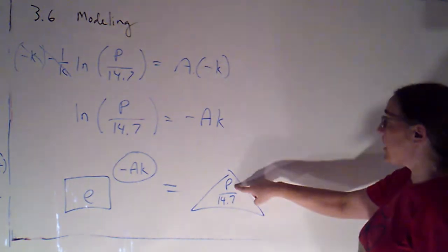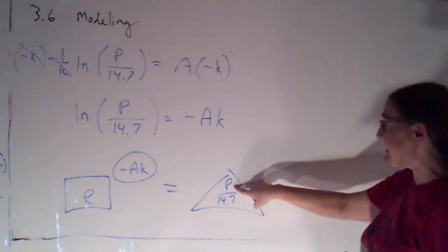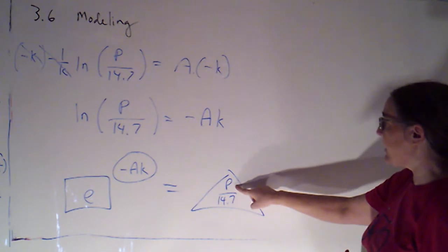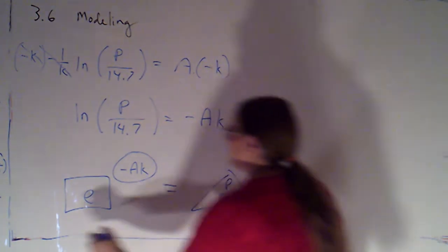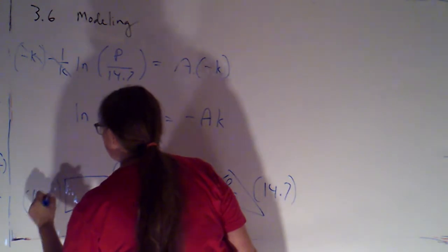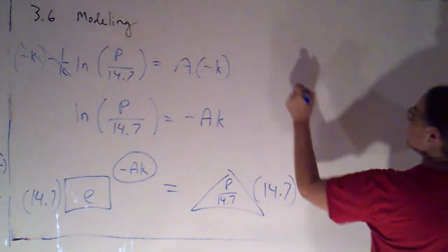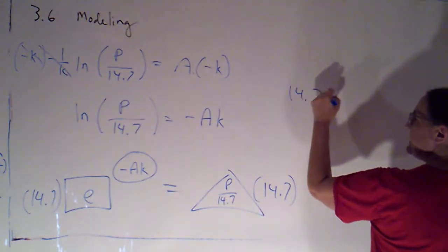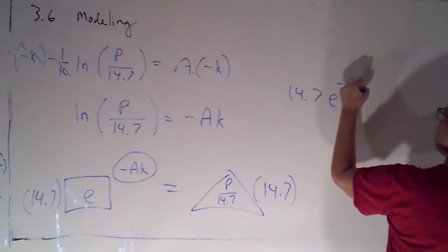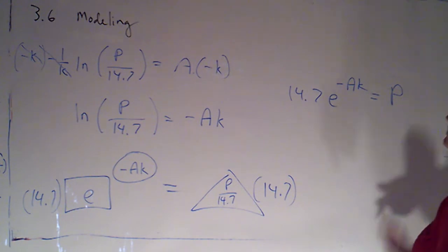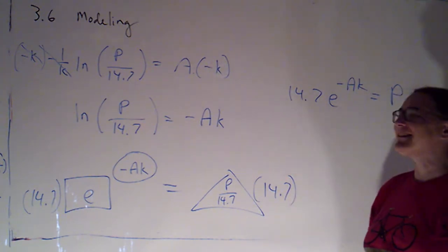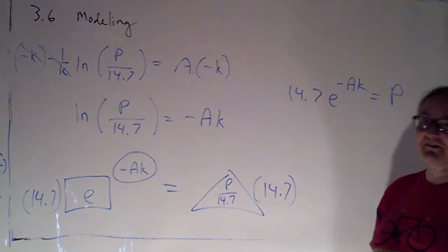Now we were trying to solve for p, so if I want to get p by itself, it looks like I would want to multiply both sides by 14.7. So I would have 14.7 e to the negative a k is equal to p. So we're basically just doing the skills that we had in the last section, we're just working with an awful lot more letters.